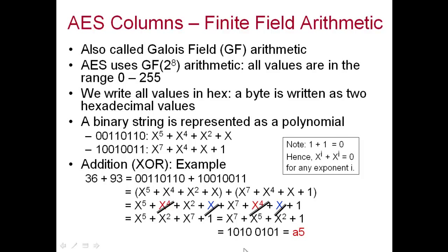Writing 1010 0101 in hexadecimal: the upper four bits 1010 equal A, and the lower four bits 0101 equal 5. So 36 + 93 equals A5 in this finite field arithmetic.